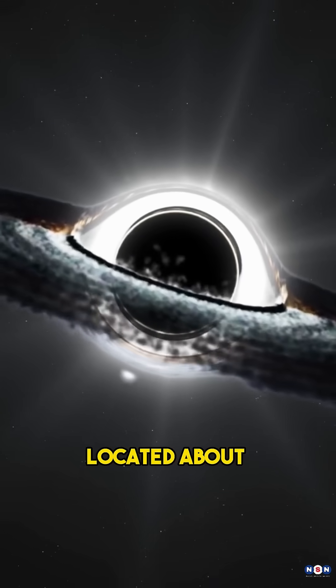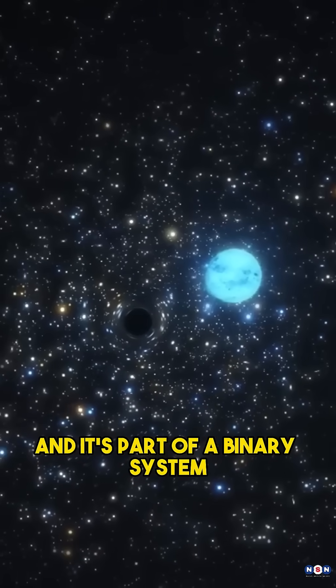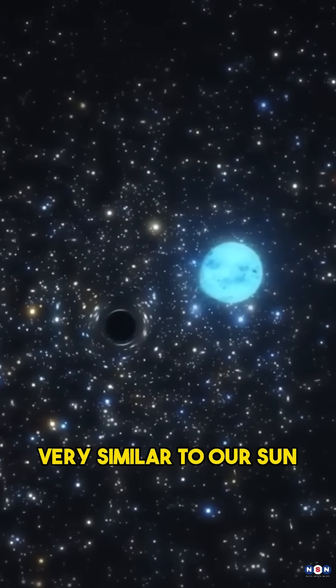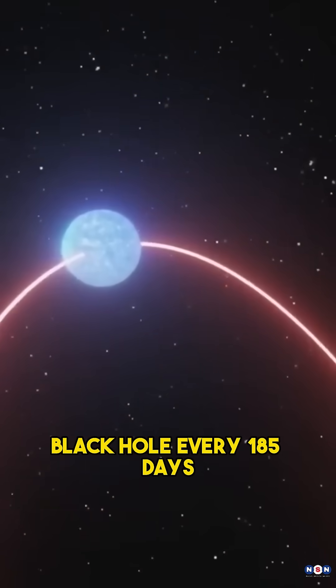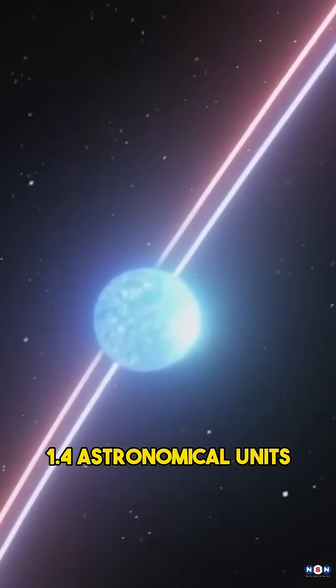Gaia BH1 is a black hole located about 1560 light-years away from us, and it's part of a binary system with a star that is very similar to our Sun. This star orbits the black hole every 185 days at a distance of about 1.4 astronomical units.